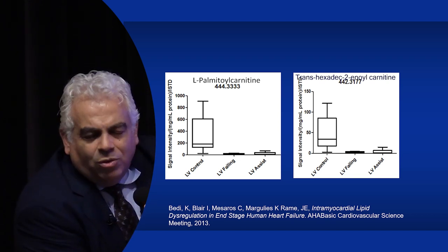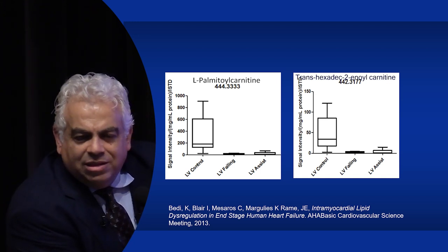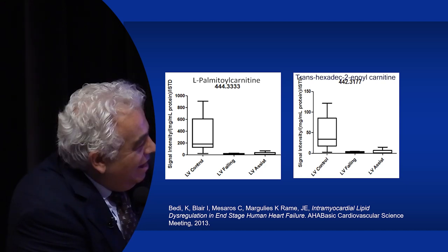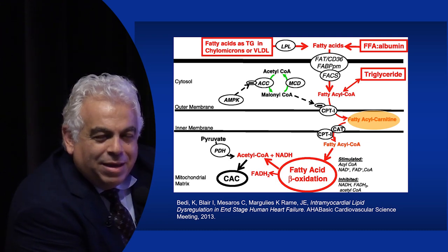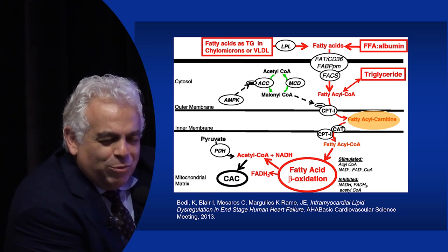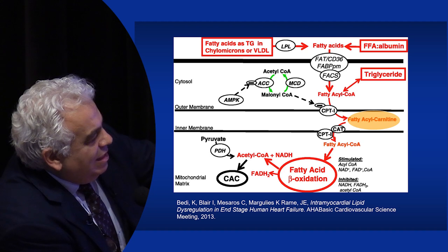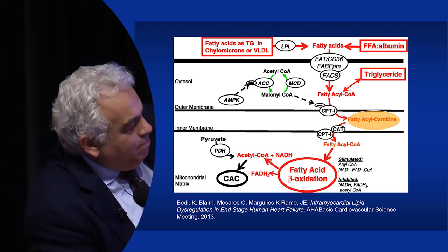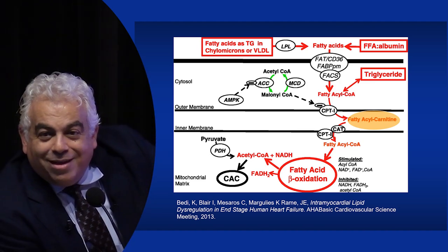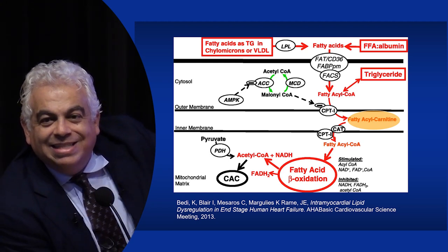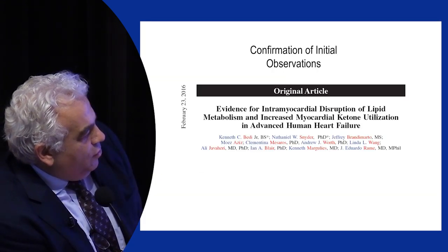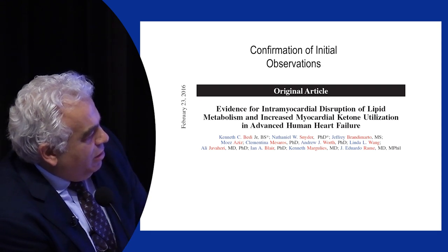Dr. Blair, who works in cancer with lipids and metabolism, said the result was crazy. We hired Ken Baity, who was doing work in our lab, and three years later we published. The fatty acyl-carnitines are labeled for easy entry into the mitochondria so they can enter the cycle to make acetyl-CoA — the common currency for making energy in organs. The failing heart was a desert of lipids — confirmed in a heat map with non-failing versus failing, reproduced in about 20 explanted failing heart samples.